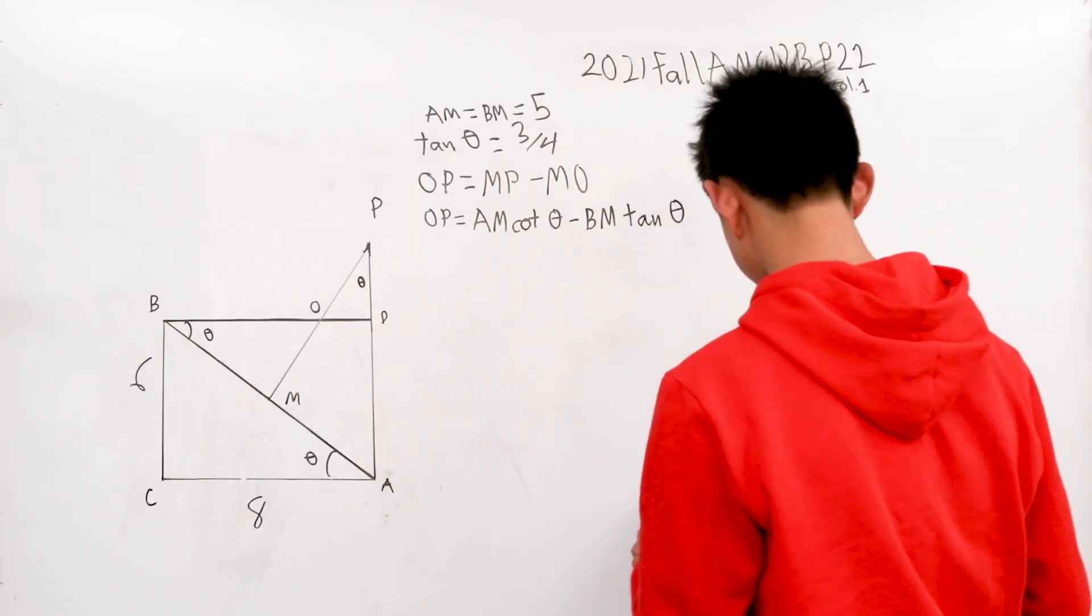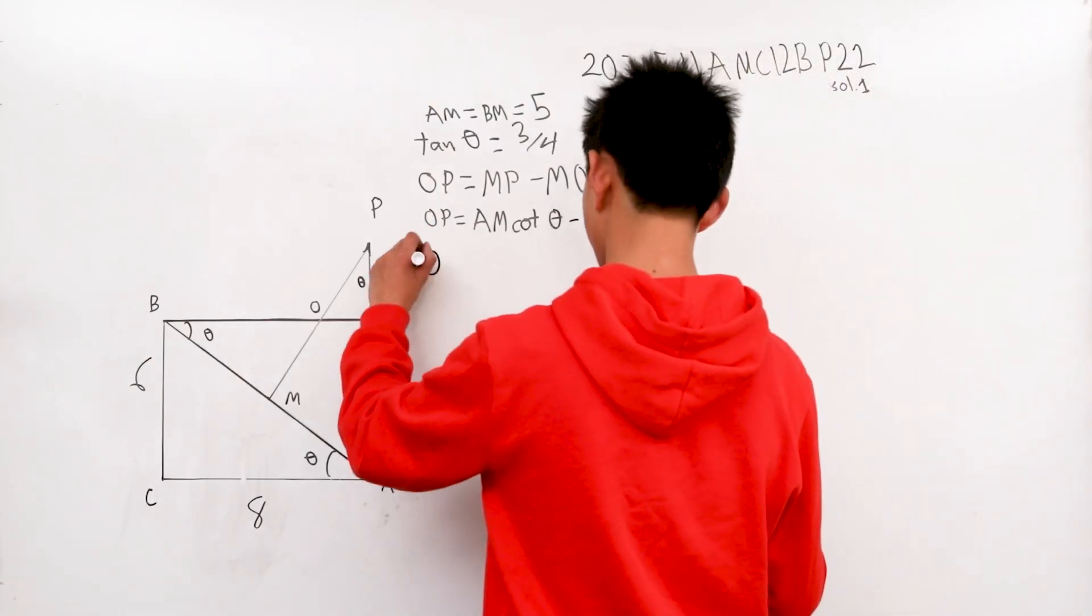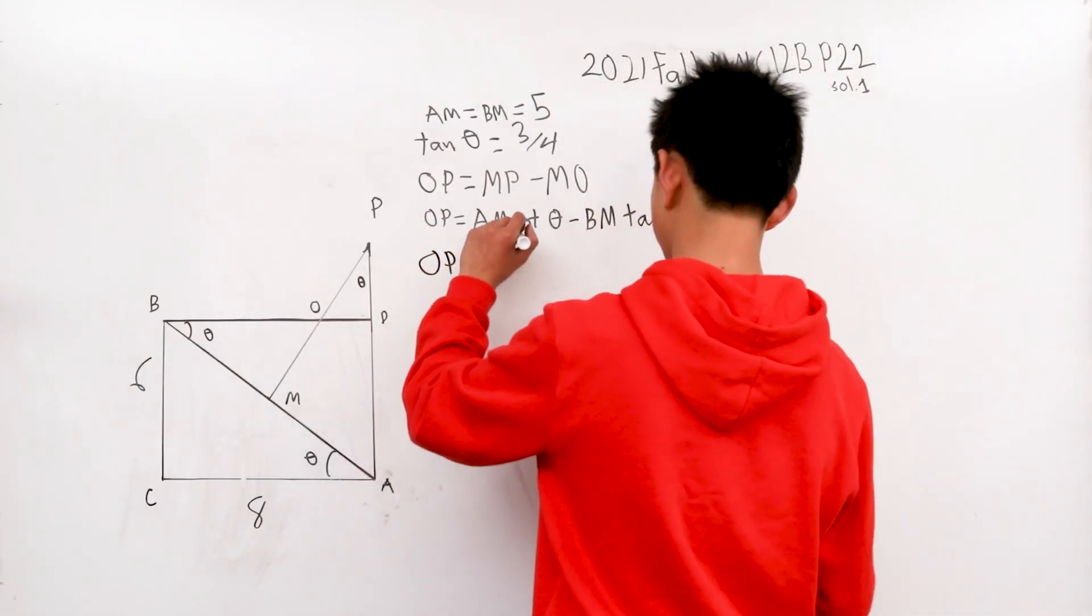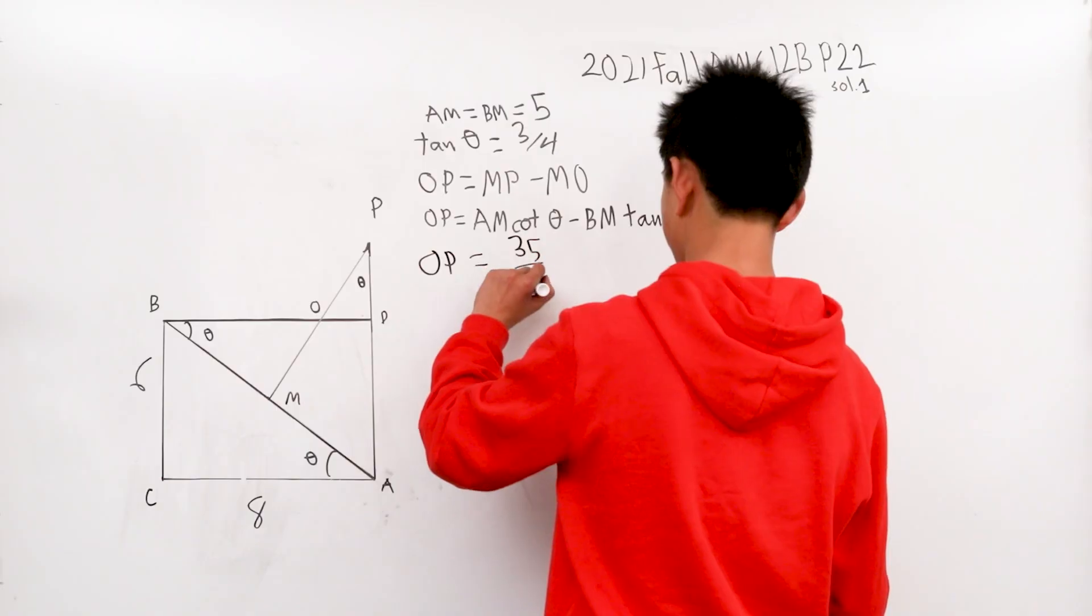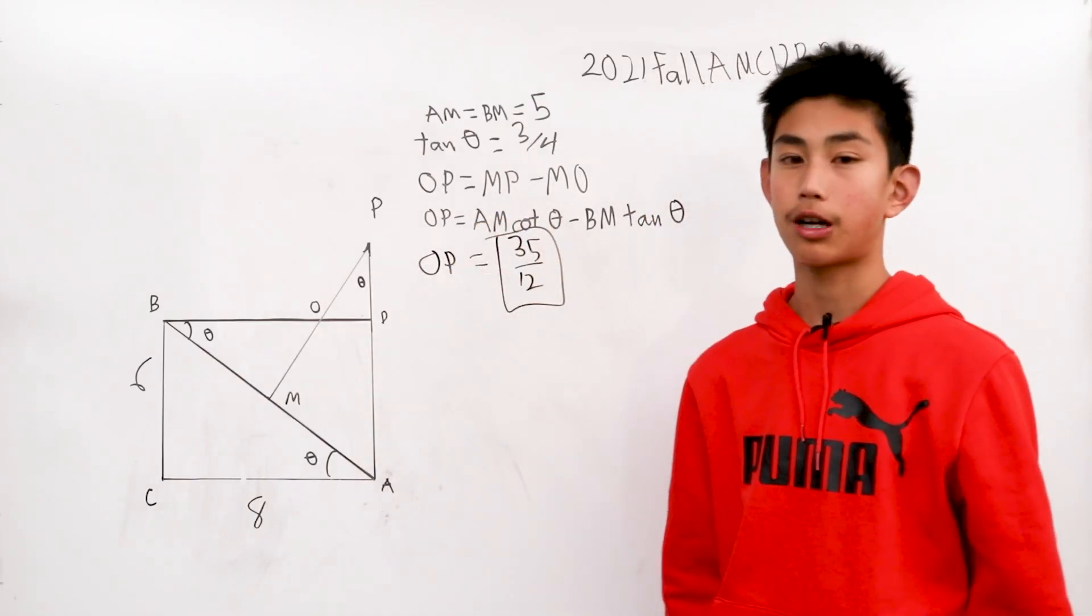So once you do that, you will get the desired answer of OP has a length of 35 over 12, and that's our answer for this problem.